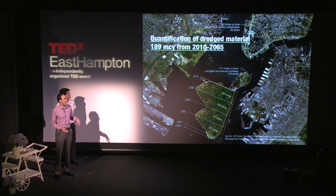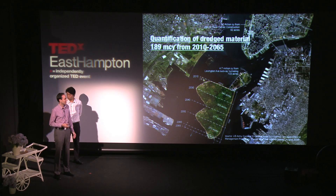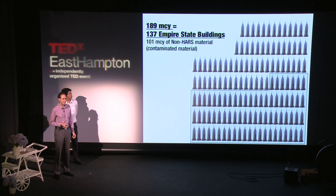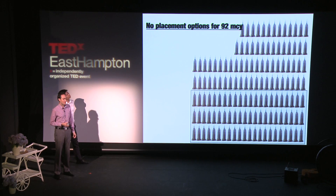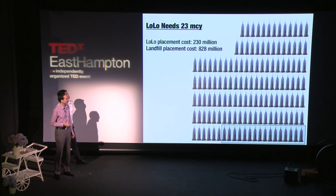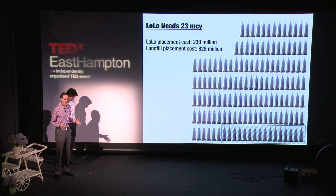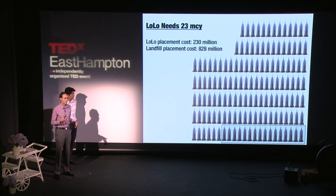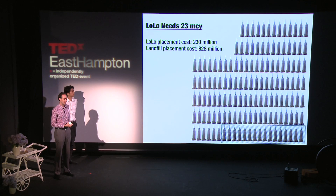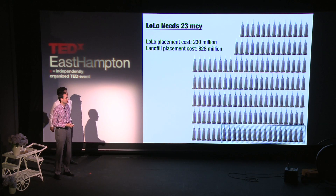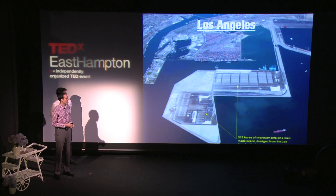The rest gets shipped to brownfield sites, landfills, and mines at a projected cost in the billions — some of it has even been shipped as far as Texas. We want to treat that waste as a resource. To give a quick example: if we dumped it all back in the harbor, it would make an island equivalent to 137 Empire State Buildings in volume. Right now the Army Corps of Engineers hasn't even identified placement sites for 92 million cubic yards, and we need 23 million — hopefully thinking about city growth this way could change the precedent for how we use this type of waste as a resource.